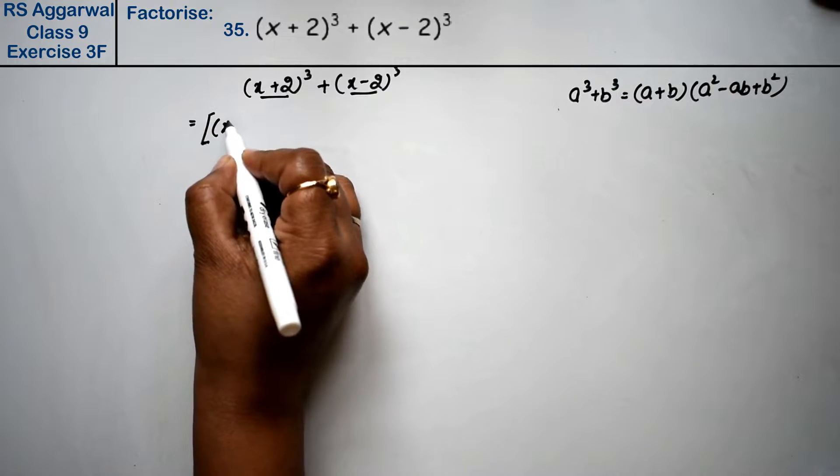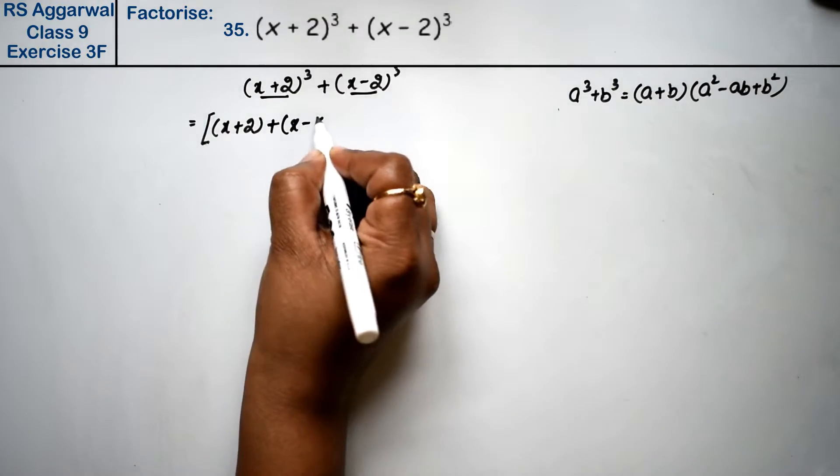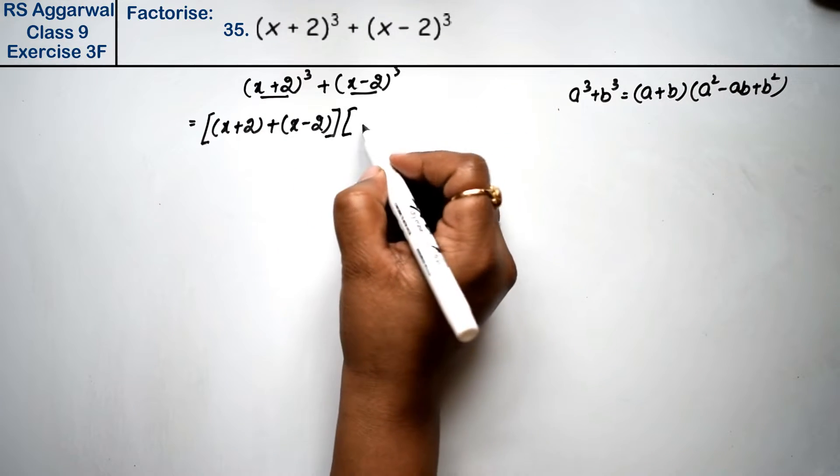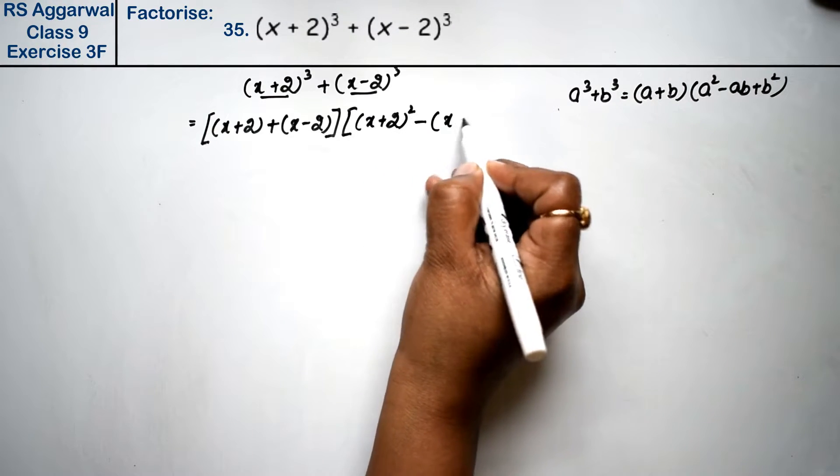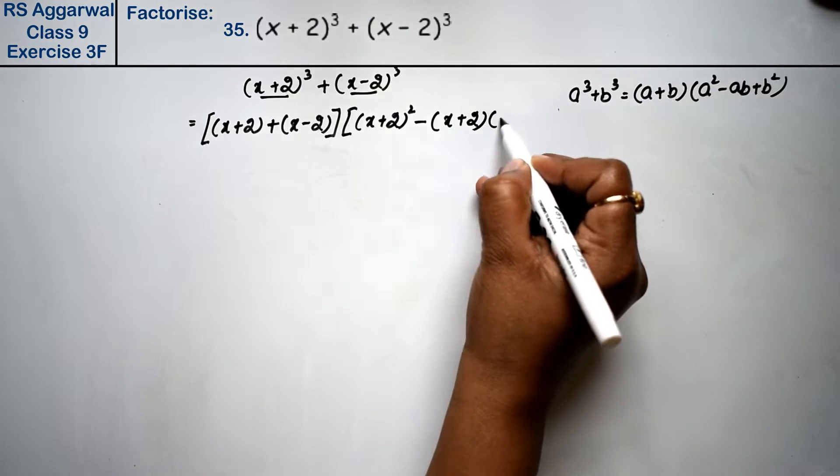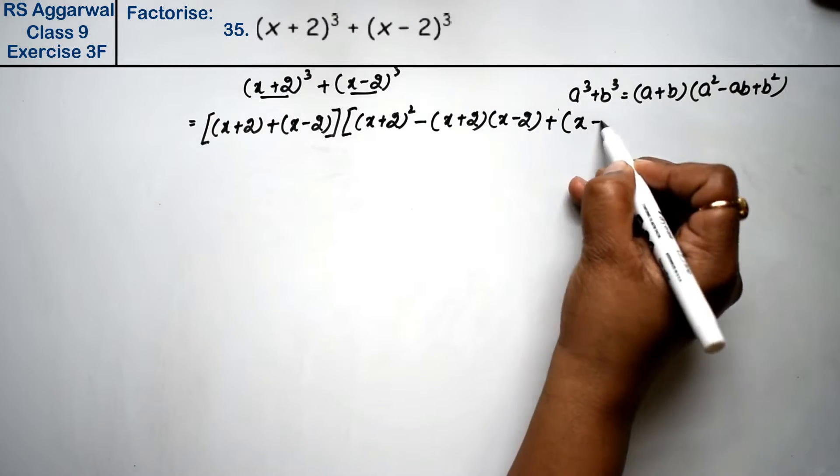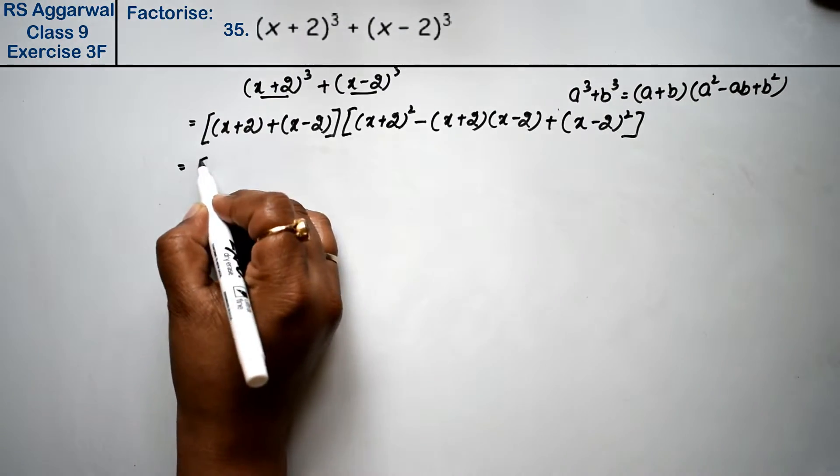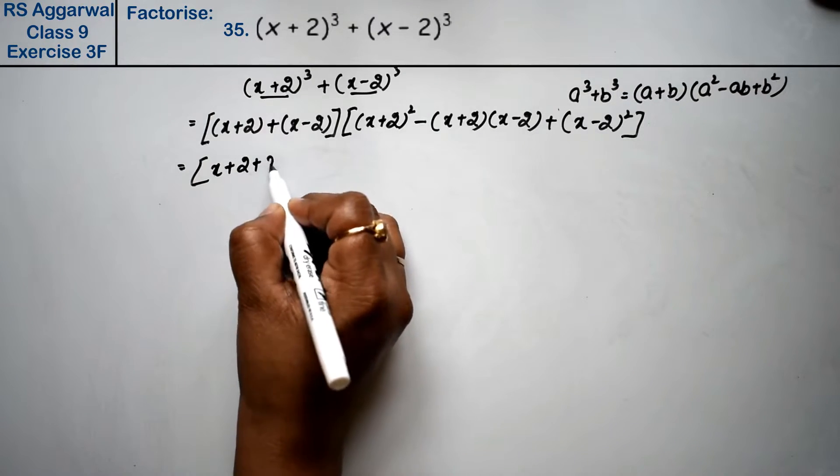So we write: bigger bracket (a+b), next bigger bracket a², that means (x+2)² minus ab which is (x+2)(x-2) plus b² which is (x-2)².